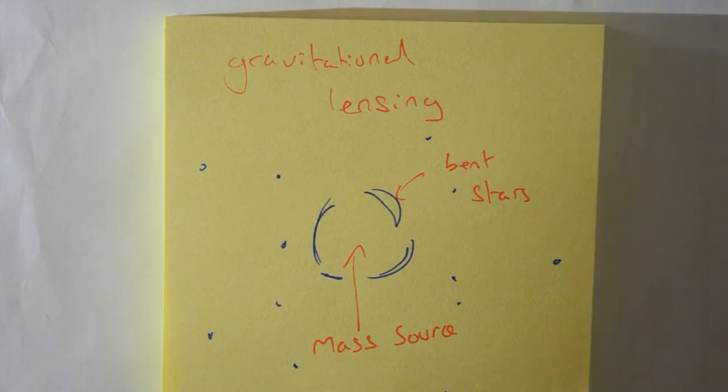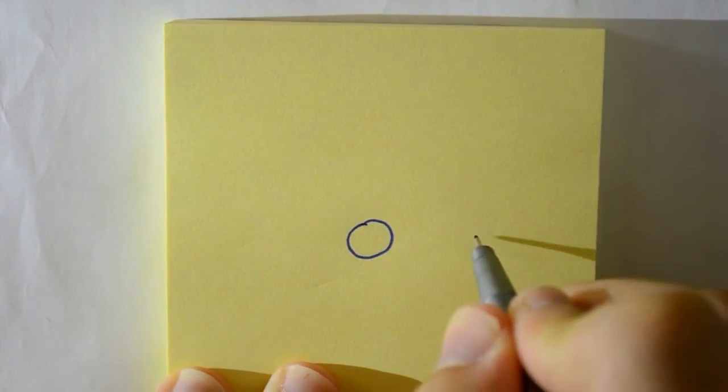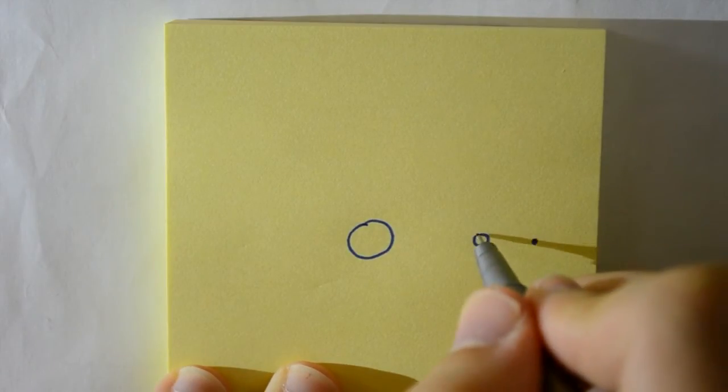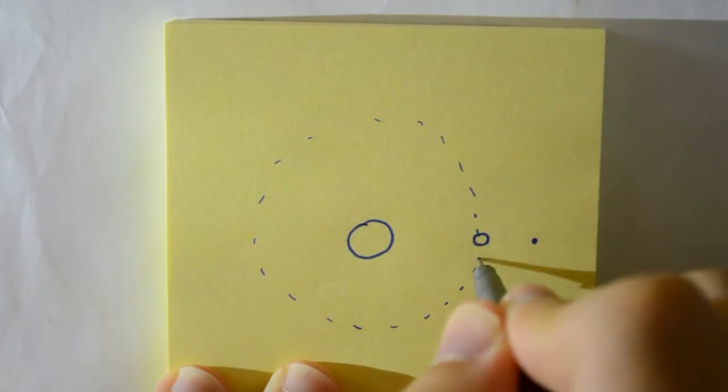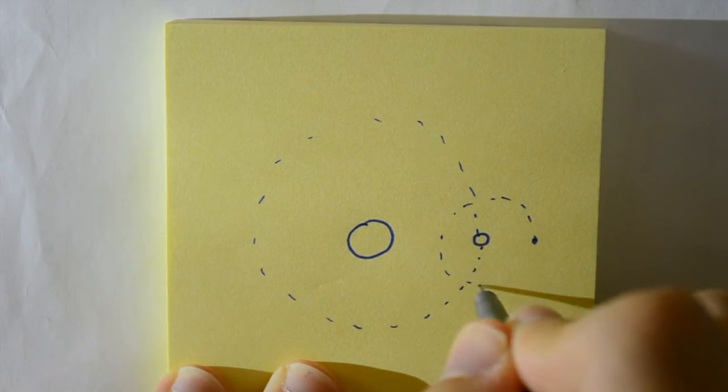Now you may have noticed that I said gravity is nearly everywhere in the universe, but it also has an infinite range. So you may be wondering, why isn't it everywhere in the universe?